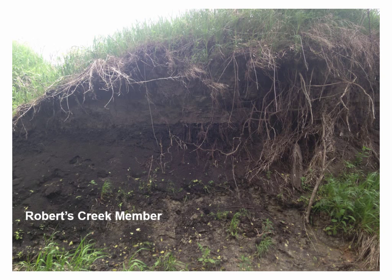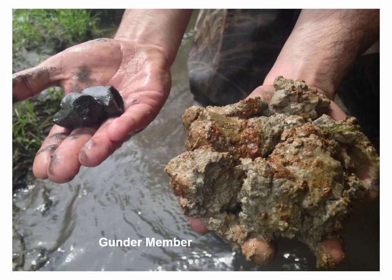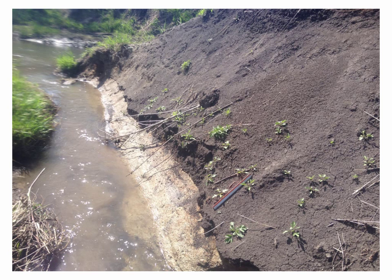The Roberts Creek member is that very dark layer — key because we're very interested in how each member erodes and delivers phosphorus to the channel. The Gunder shows a lot of mottling and even old organic matter and root channels, which is quite interesting. The layering is pretty obvious up and down the watershed — here's the Gunder, here's the Roberts Creek.